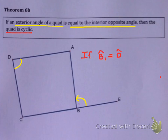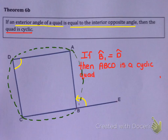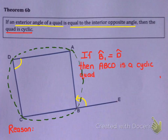So if you can prove that angle B1 equals angle D, then ABCD must be a cyclic quad, which means there must be an imaginary circle that can go through all four points. This is the third way to prove a quad is cyclic. The first way was theorem 4b — proving angles in the same segment are equal. The second way was theorem 5b — showing opposite angles of a quadrilateral add to 180 degrees. And this is the third way: showing the exterior angle equals the interior opposite angle. When using this to prove a quad is cyclic, the reason is 'exterior angle equals interior opposite angle' — you can't mention cyclic quad in the reason, because you're trying to prove that it is cyclic.